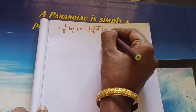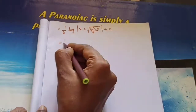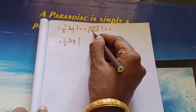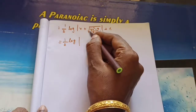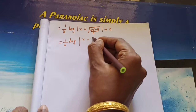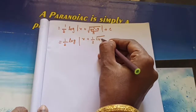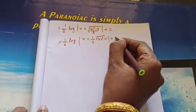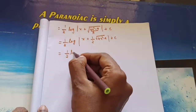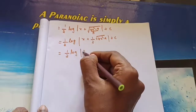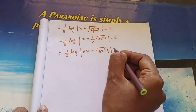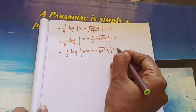Taking the LCM, that equals (1/2) times log|(2x plus √(4x² minus 9))/2| plus C. Simplifying further: we get (1/2) times log|2x plus √(4x² minus 9)| plus C. After this step we cannot simplify further, so this is the answer.